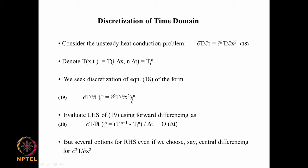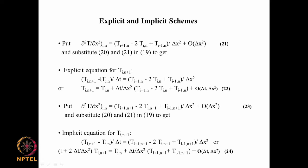For the spatial derivative on the right-hand side, this is a second derivative and we can use central differencing. However, we have a choice about the time index n. Using central differencing, ∂²T/∂x² at (i, n) is approximated as (T_{i+1}^n − 2T_i^n + T_{i-1}^n) / Δx², which is a second-order central difference approximation at time level n.